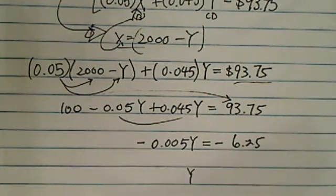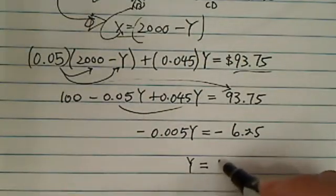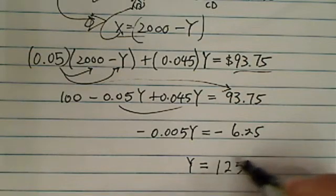Divided by 0.005, you'll have y is equal to $1250, $1,250.